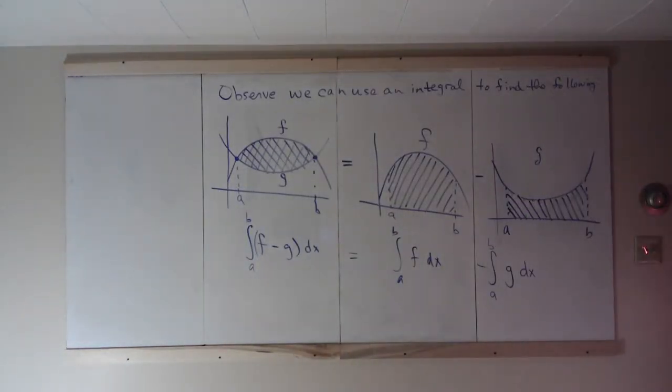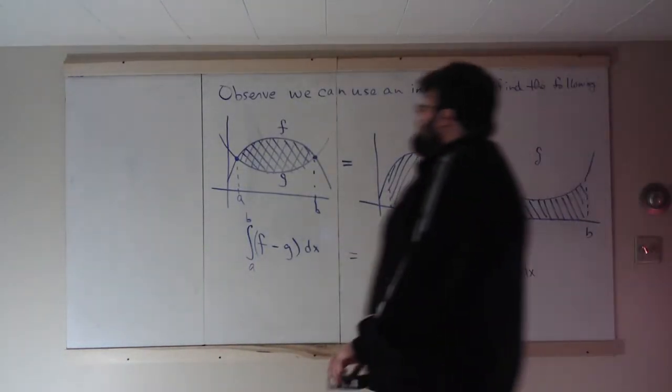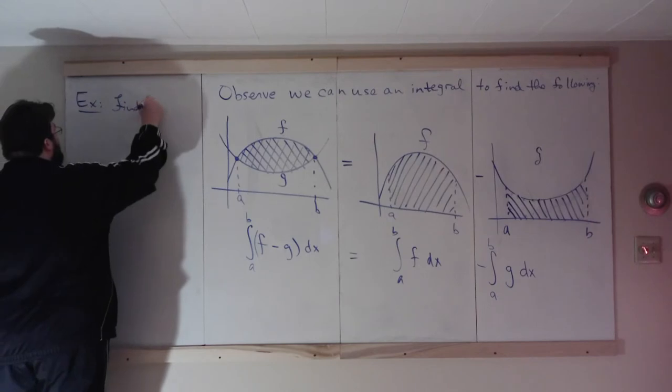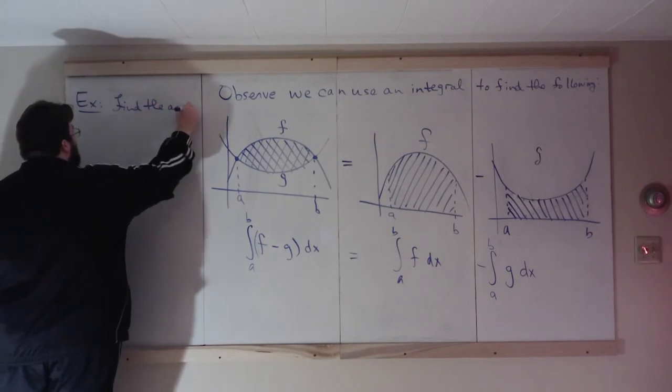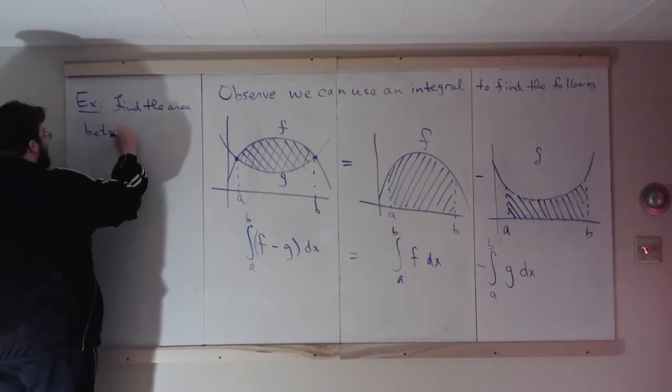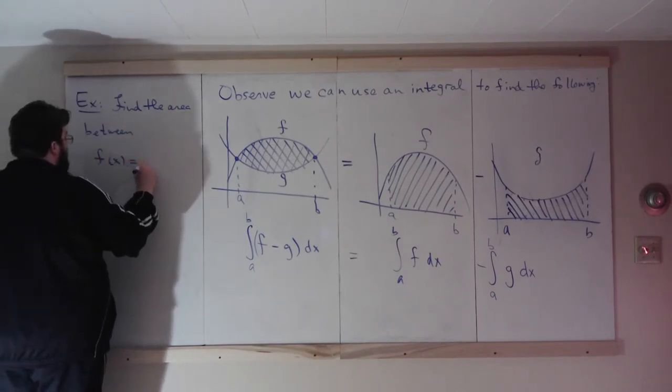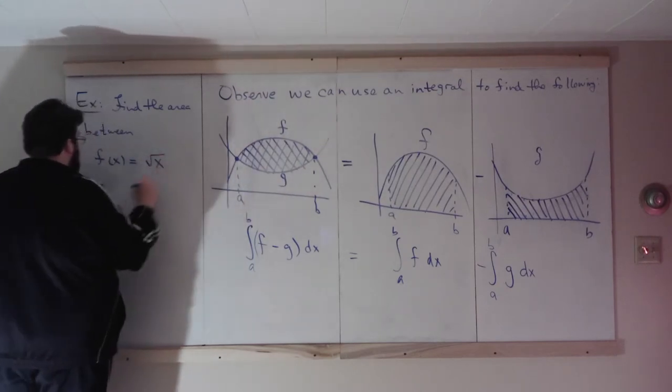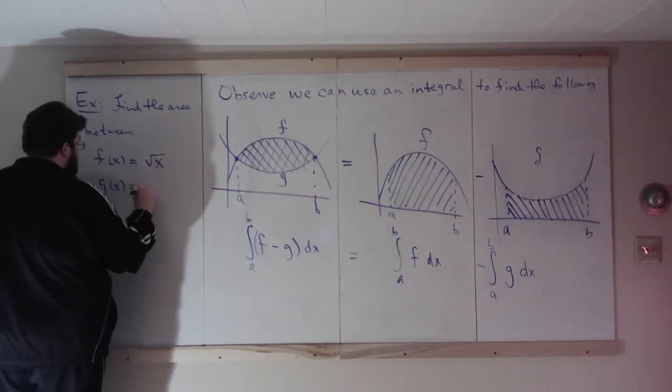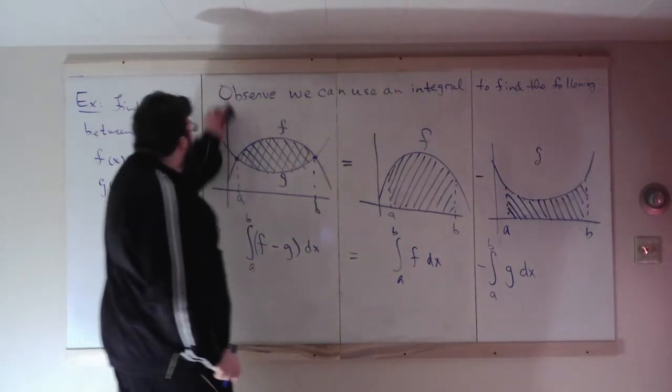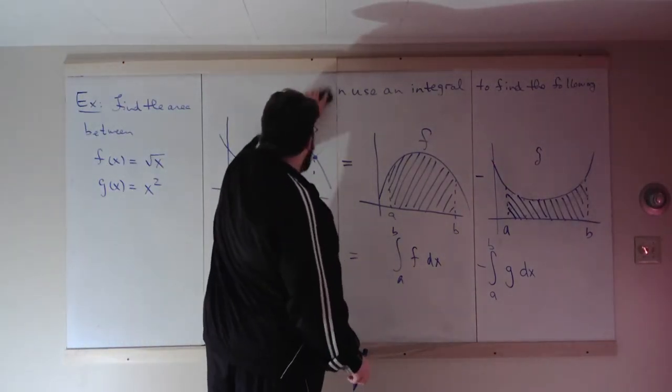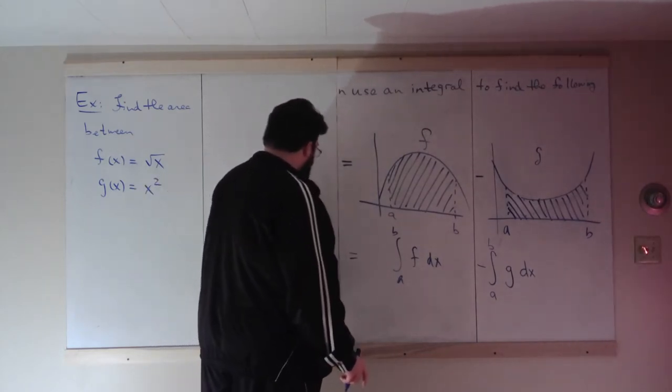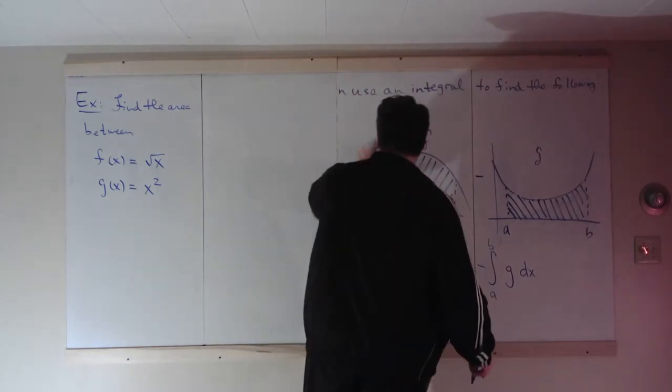So let's look at an example. Find the area between these two curves, F of X equals root X and G of X equals X squared. You can draw these functions. You don't have to. I won't draw them. Well, maybe I will. We'll see what I do.